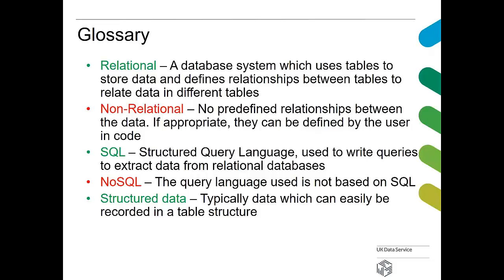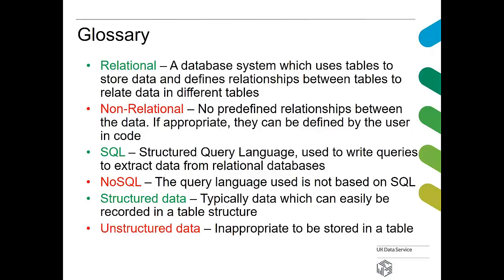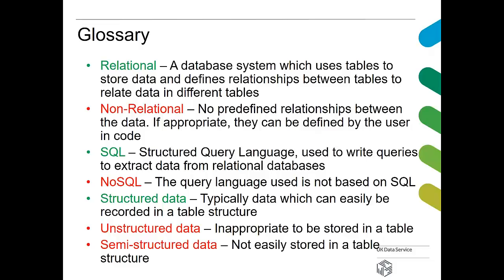Structured data is data that can be easily recorded in a table structure — nice and ordered with columns and rows. Unstructured data can't be stored in a table; things like PDF files and audio files. Semi-structured data is not easily stored in a table — you can shoehorn some of it into columns but it's not ideal. Semi-structured data is really the type we're dealing with today in MongoDB, rather than truly unstructured data, though unstructured data can also be stored in both relational and non-relational databases.